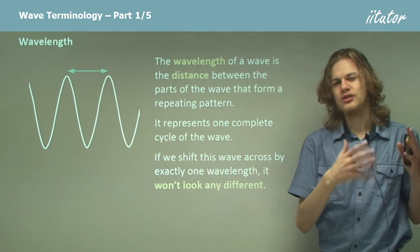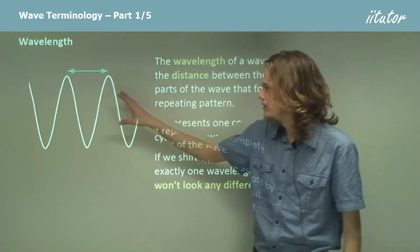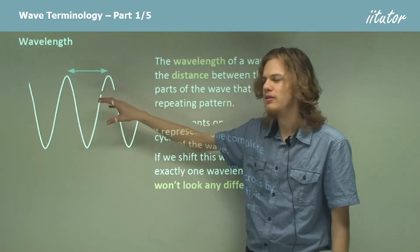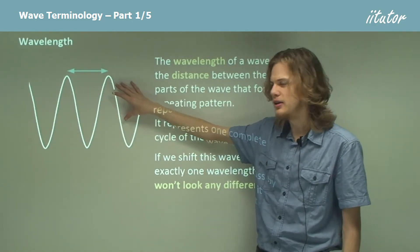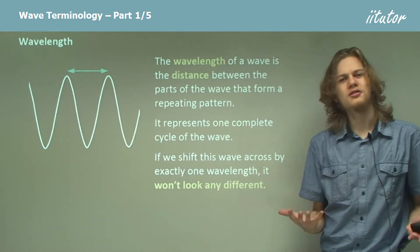if we shift that pattern across by one wavelength, the pattern will look exactly the same as before. Instead of this part being in this location, it'll be this part instead. The repeating pattern means that we just can't tell the difference.